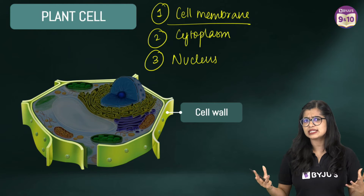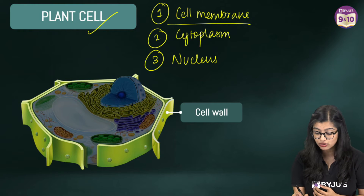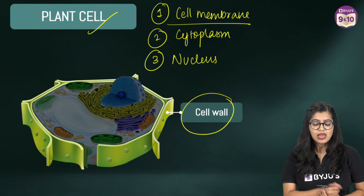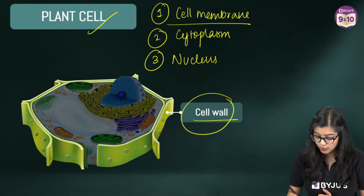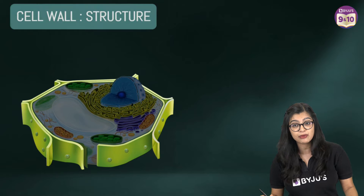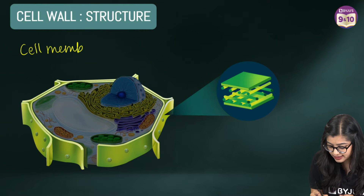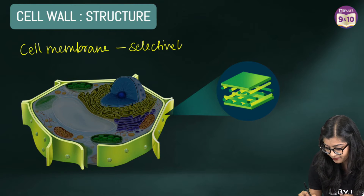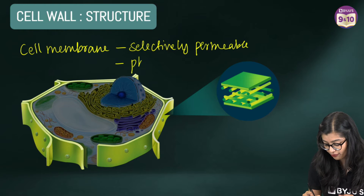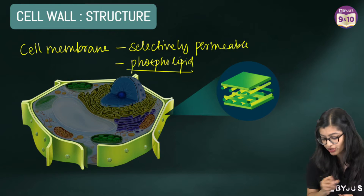Just like how houses tend to have a fence around them, plant cells have an additional structure called the cell wall. Now how is a cell wall different from a cell membrane? First and foremost, we know that the cell membrane is a selectively permeable membrane, and we know that the cell membrane is made up of phospholipids — there is a phospholipid bilayer associated with it.